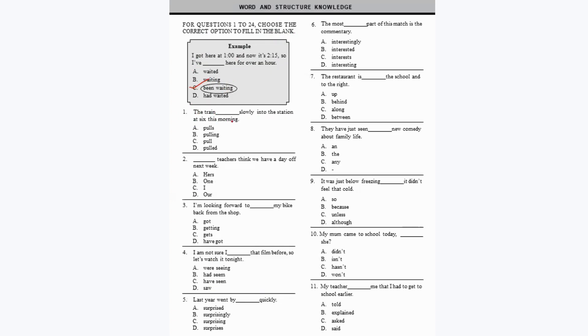Question 1: 'The train dashed slowly into the station at 6 this morning.' You need the correct verb — the train pulled slowly into the station at 6 this morning, so option D is correct. 'Pulled' means the train arrived slowly at the station at 6 this morning.